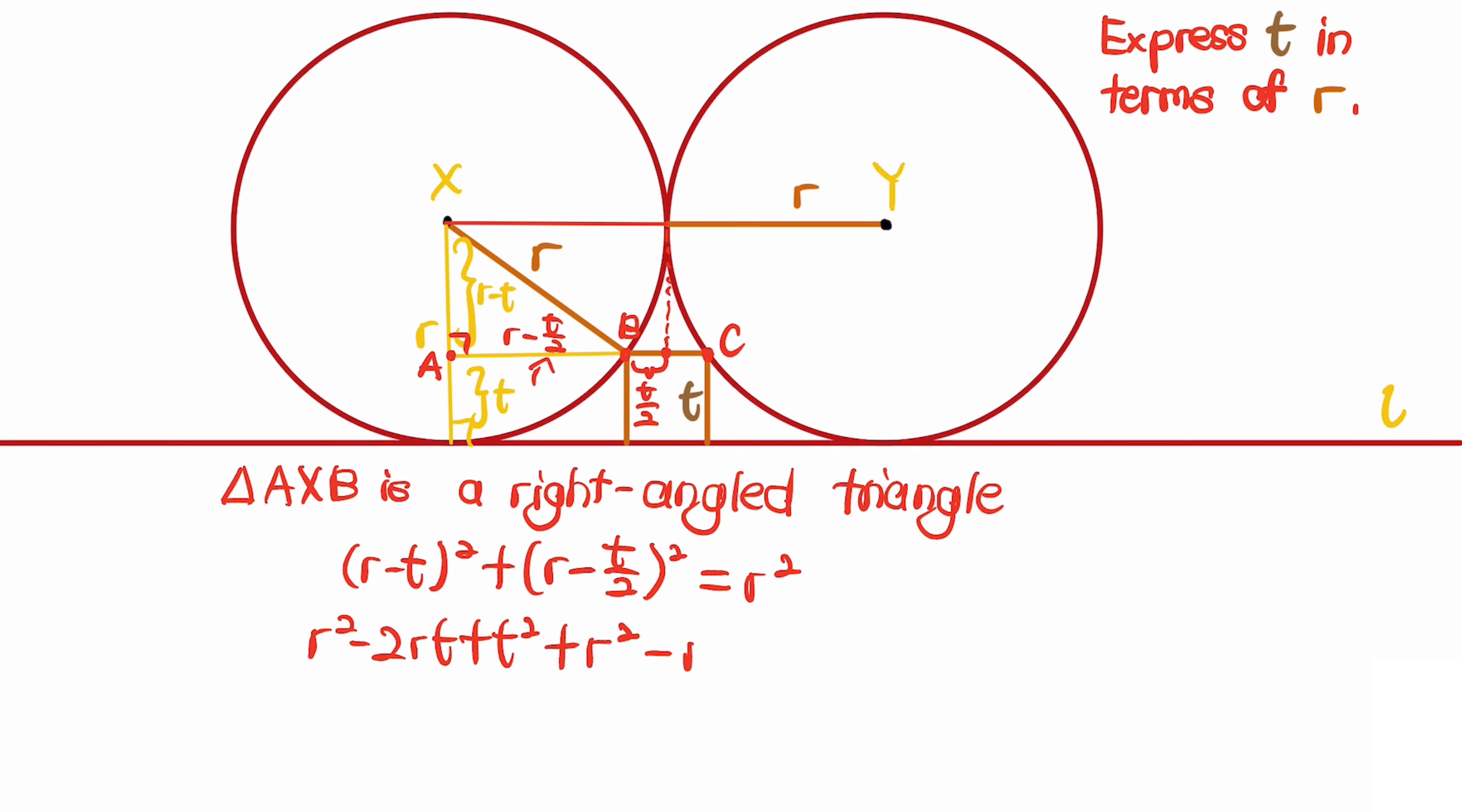You can see we can cancel out r² from both sides. Let's group the terms with t² together, so we get 5t²/4 minus 3rt plus r² equals 0.